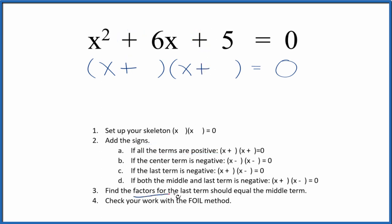Now we can find the factors for that last term, the 5 here, and they should add up to the middle term. And I know 5 times 1, that equals 5. 5 plus 1 equals 6. So let's put a 5 and a 1 here in our skeleton.